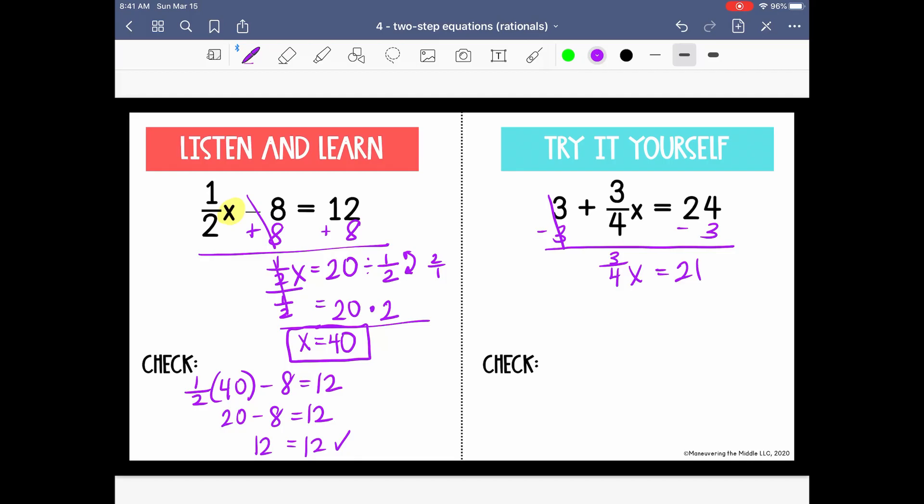3 fourths is being multiplied by x. So let's divide by 3 fourths on both sides. Okay, so again, we want to rewrite this as multiplying by the reciprocal, which will become 4 thirds. So I'm going to write 21 as a fraction also by just putting it over 1 because it's a whole number. So 21 times 4 thirds.